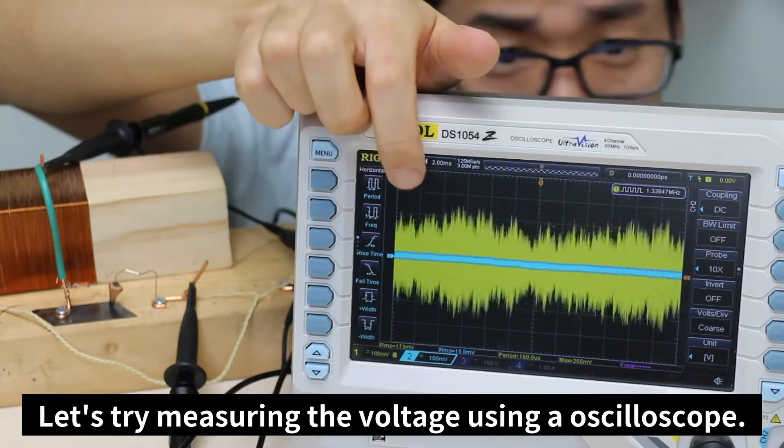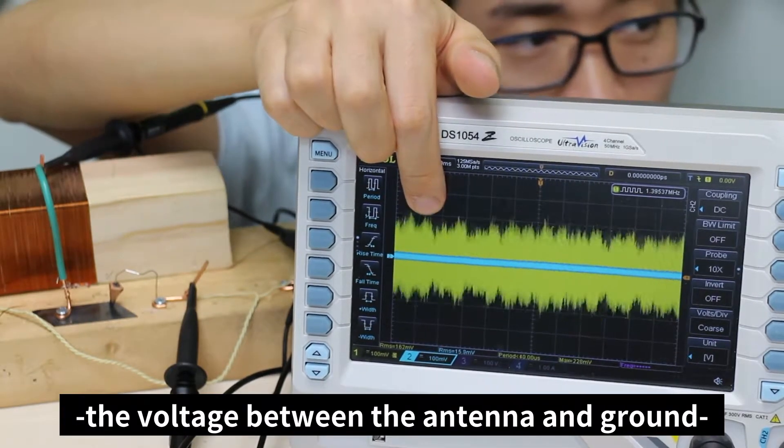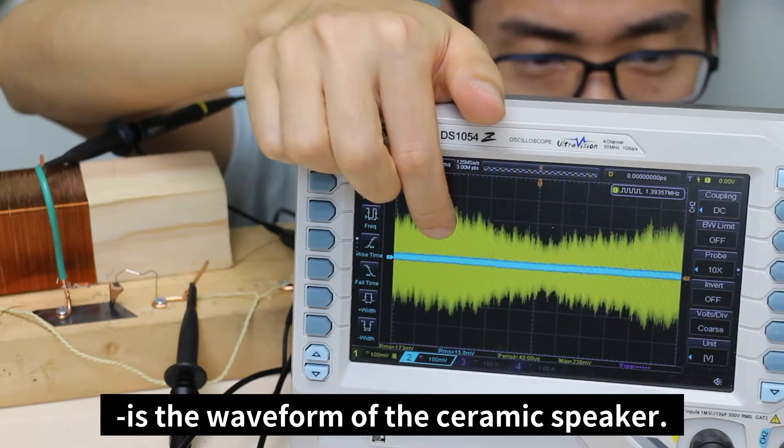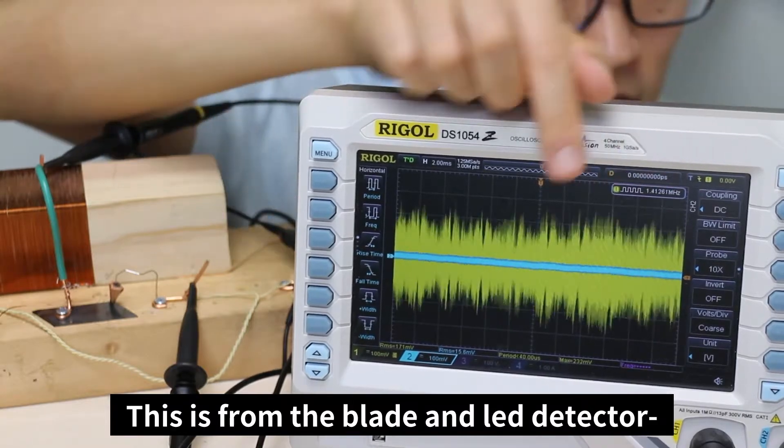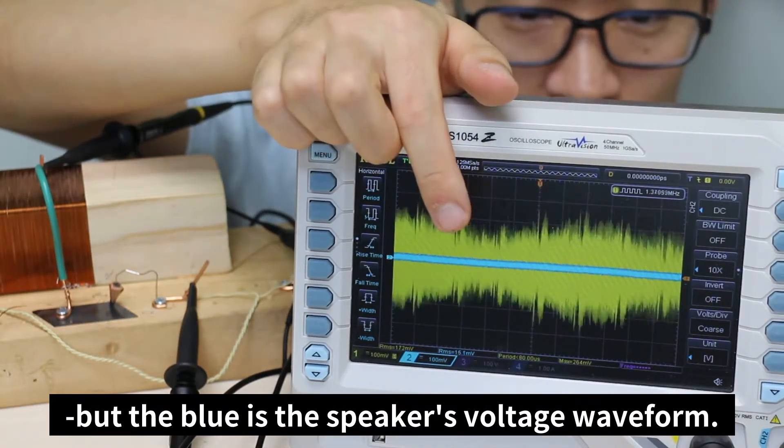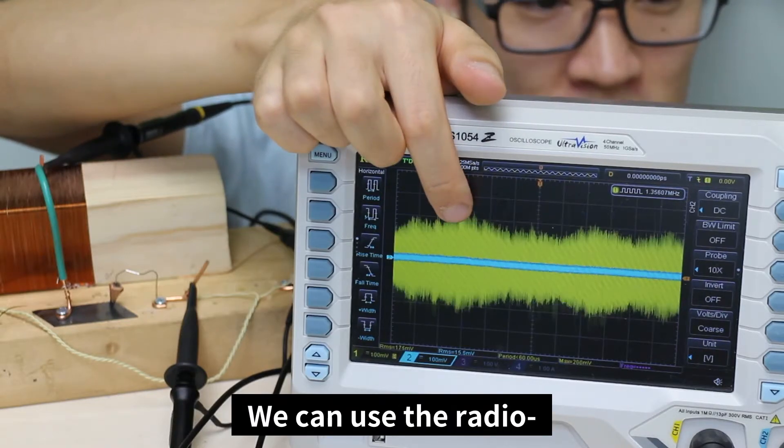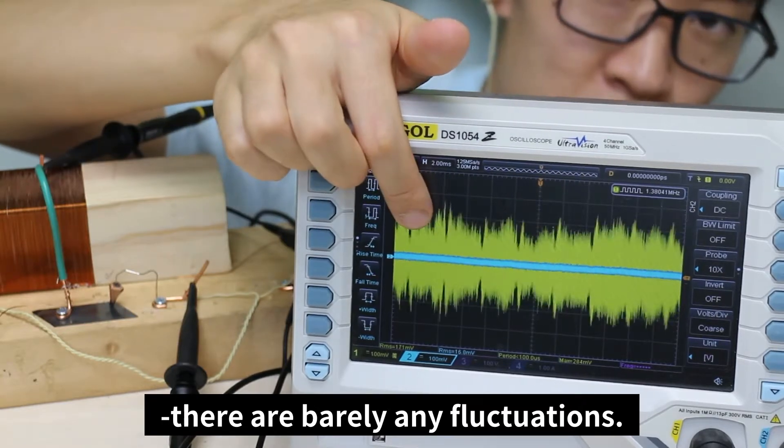Let's try measuring the voltage using an oscilloscope. The yellow measures the voltage between the antenna and the ground. And the blue waveform is the waveform of the ceramic speaker. This is from the blade and LED detector, but the blue is the speaker's voltage waveform. We can use the radio, but when we're looking at the blue waveform, there are barely any fluctuations.